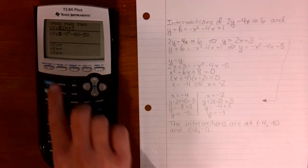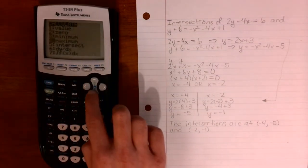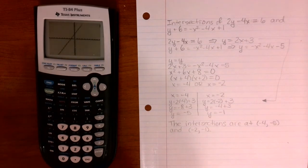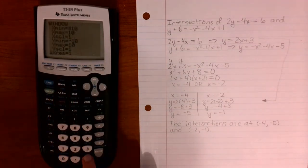Now let's press second calc. Let's go down to intersect. And now the calculator graphs these two functions. Now there are two intersections, but you can't really see them well in this window. So let's change this window.